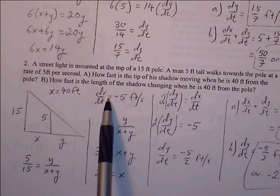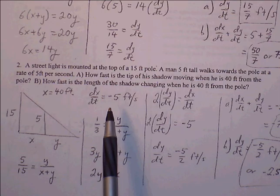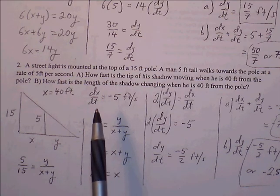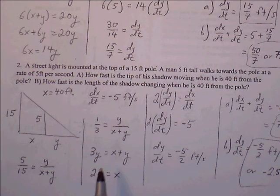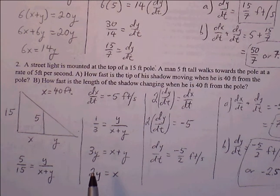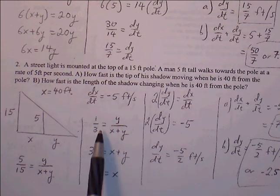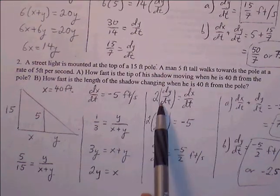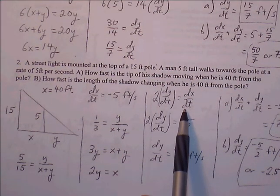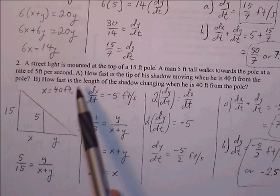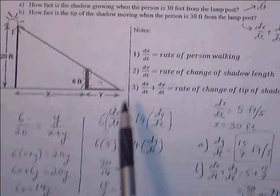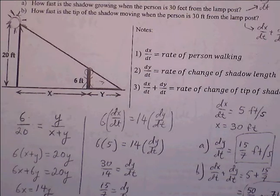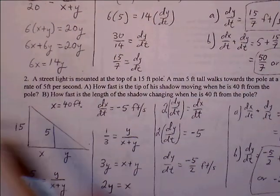Setting up our proportions: small height is to big height — 5 over 15 — equals small base to big base. The small base is y and the big base is x plus y. Cross multiplying, and first reducing 5/15 to 1/3, we get 3y = x + y. Combining like terms and subtracting y from both sides gives 2y = x. Now we have a clean equation to differentiate.